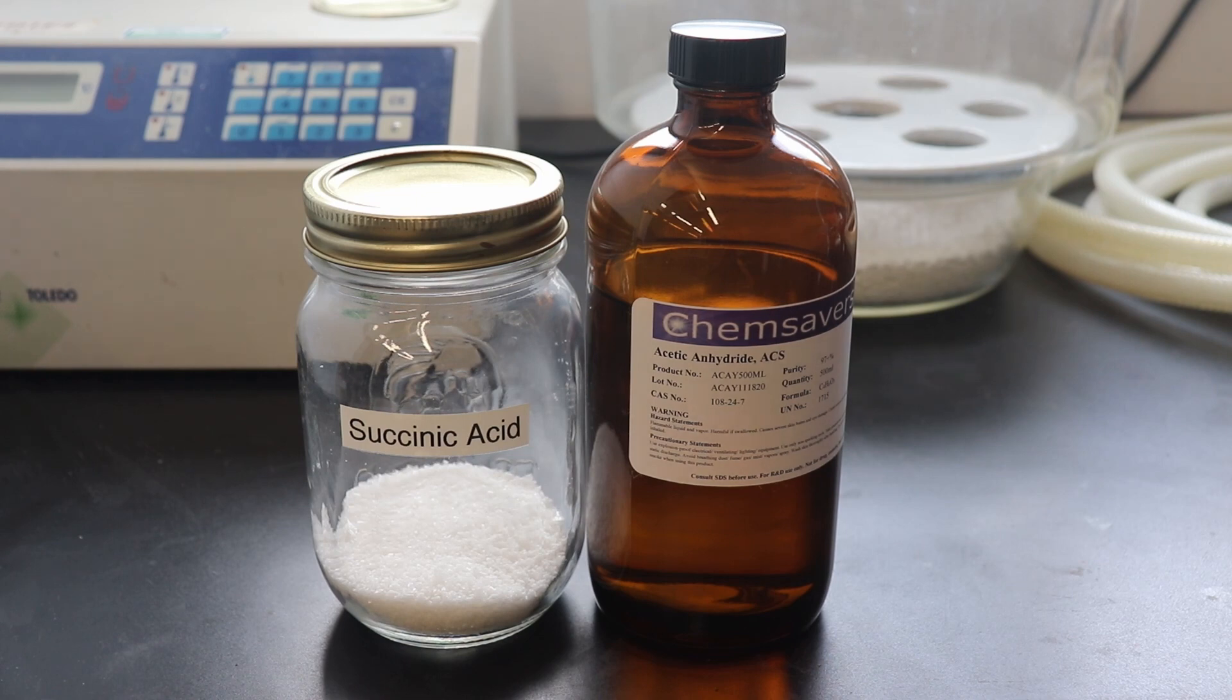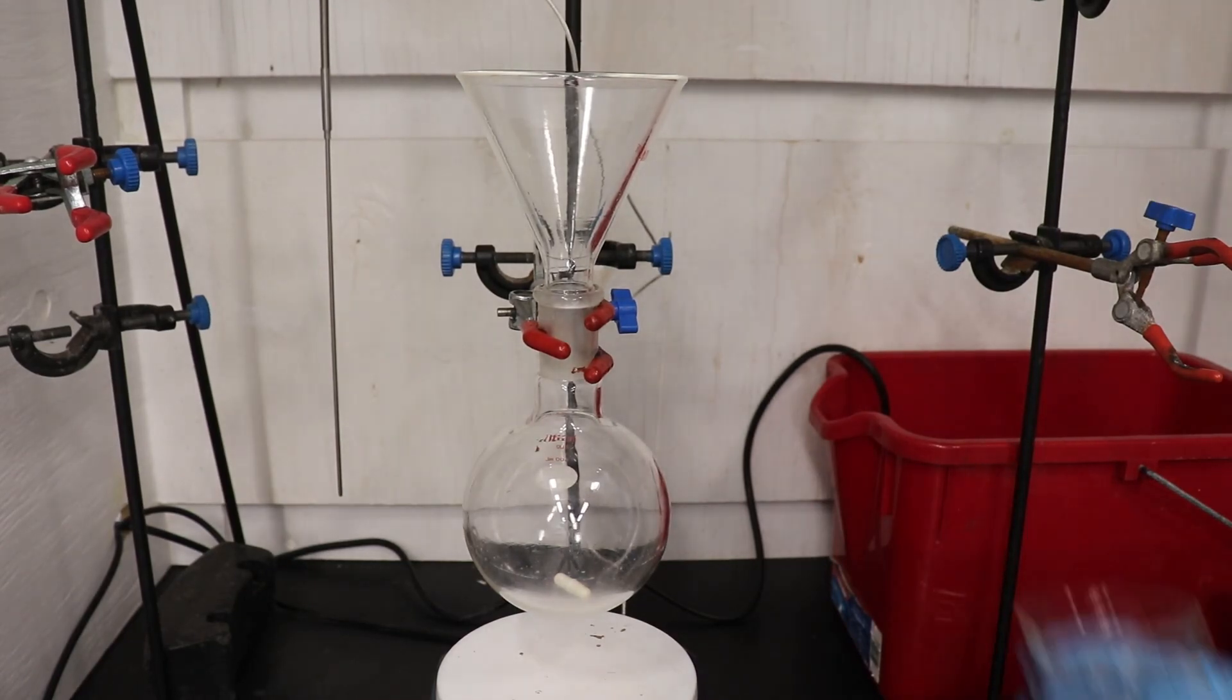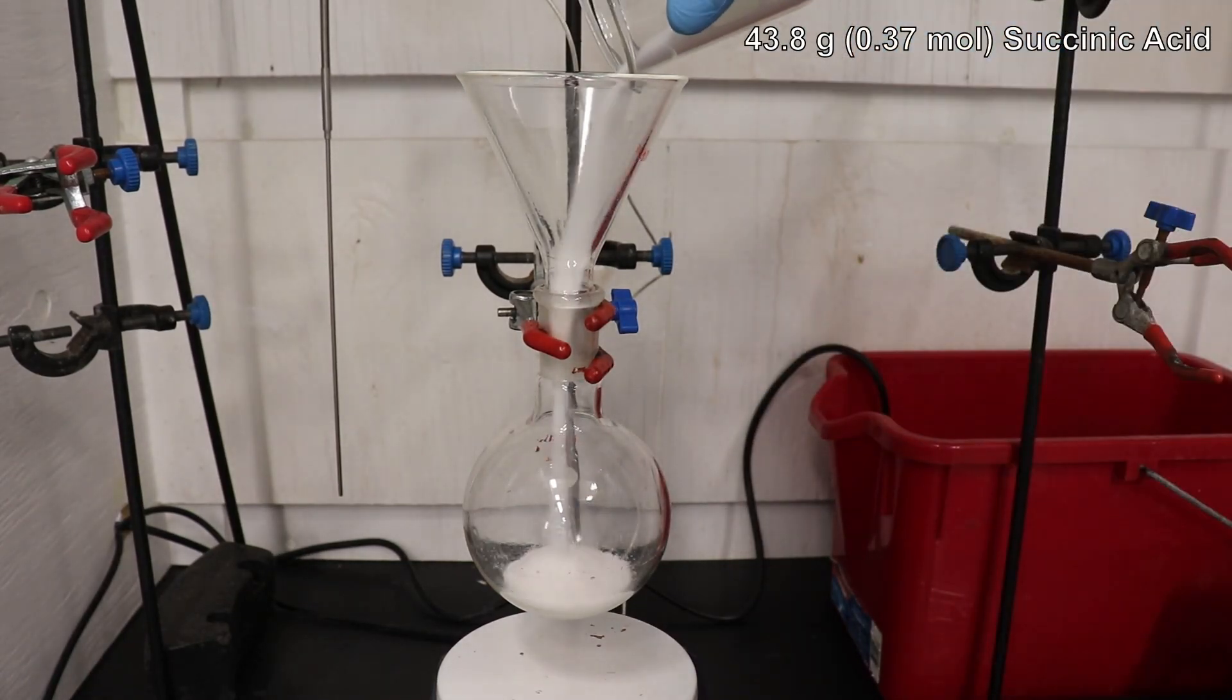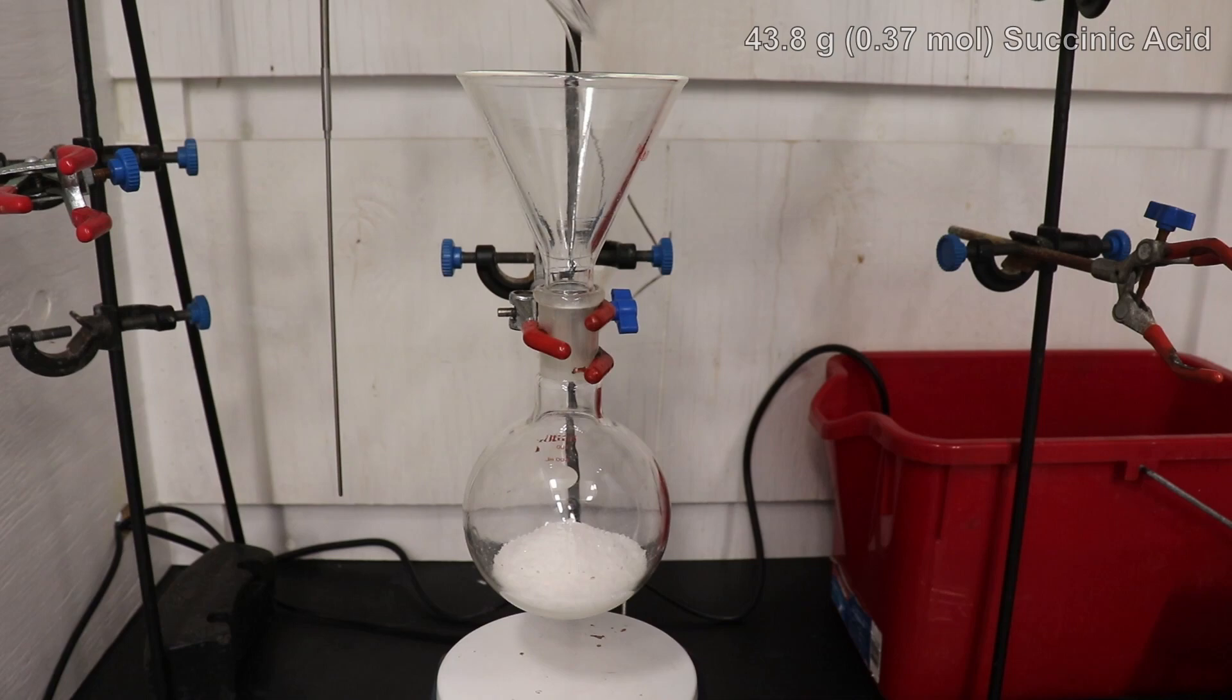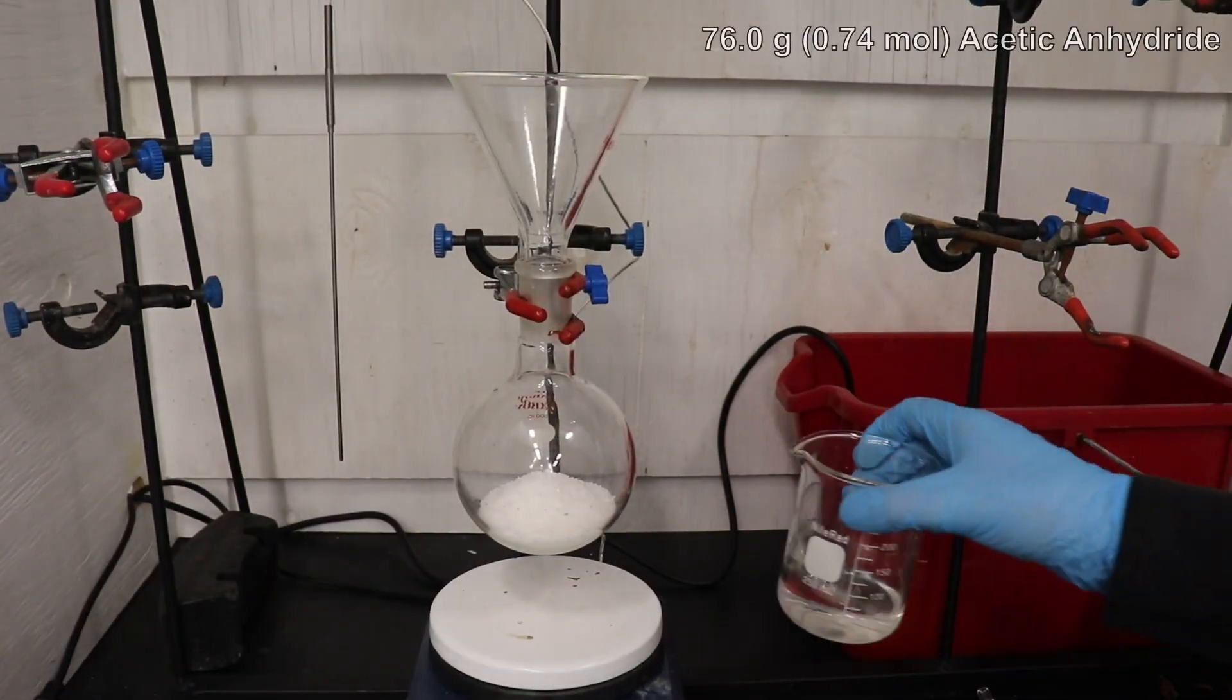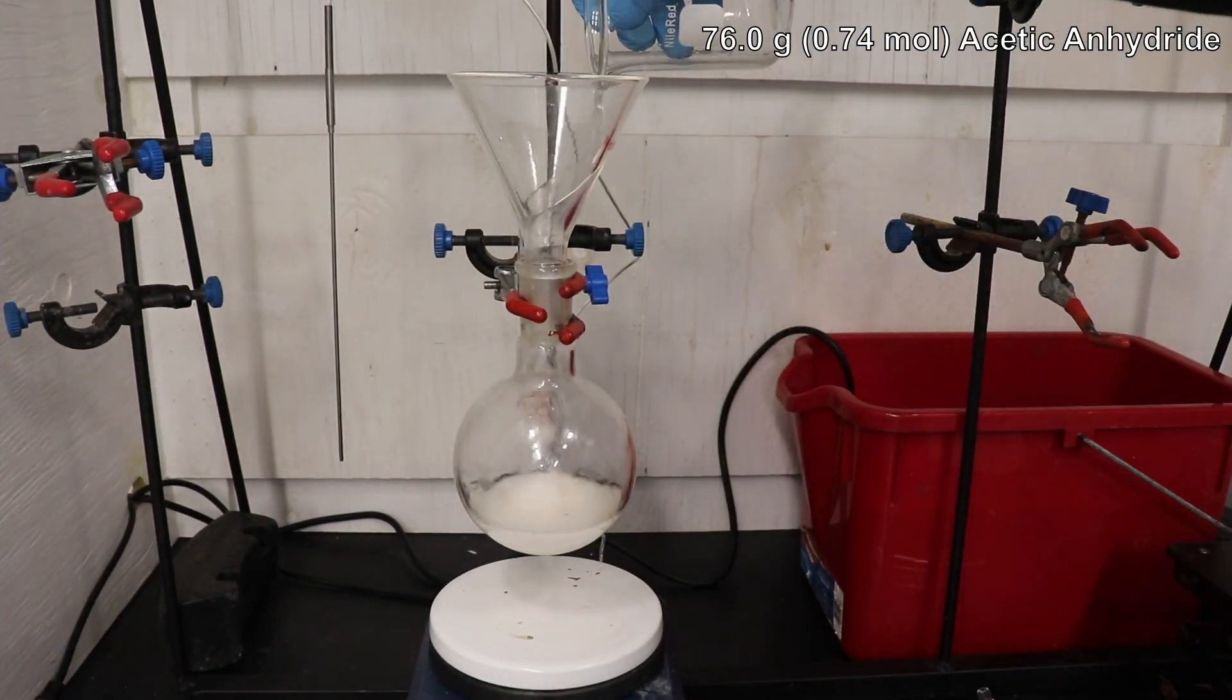Though I will discuss some other ways of dehydrating succinic acid later in the video. To begin, 43.8 grams of succinic acid was loaded into a 500 ml round-bottom flask. This was followed by the addition of 76 grams of acetic anhydride.